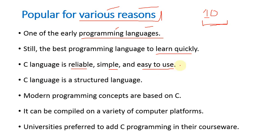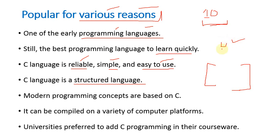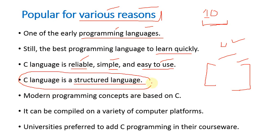C is still the best programming language to learn quickly, as you can learn all programming constructs and concepts. C language is reliable, simple, and easy to use. It is very easy to write, execute, and debug programs. C has a rich set of data types and reserved words, and each token can be easily understood by the programmer. C language is a structured language with predefined data types, operators, constructs, control structures, and functions.